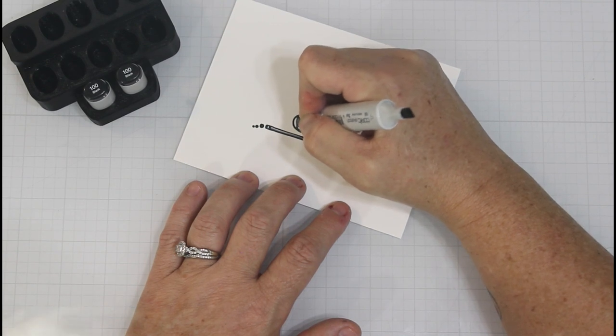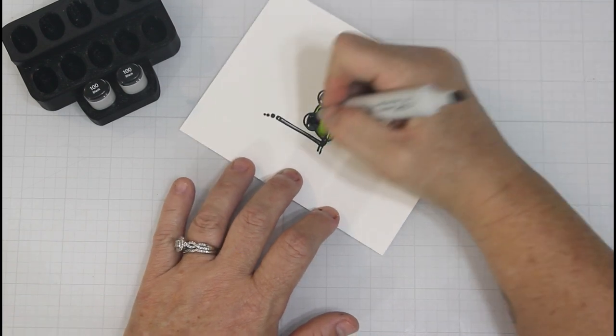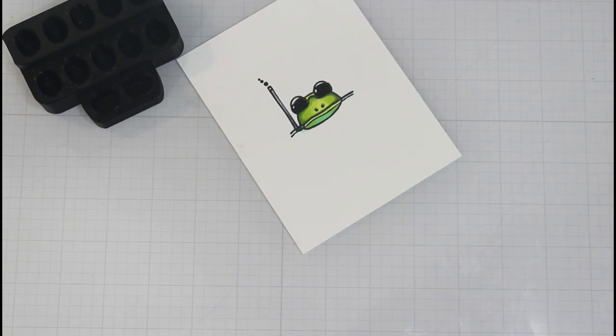I wanted his eyes to be super black so I came in with my Copic 100. You're going to see that there's a huge difference between the eyes now. It really makes those highlights pop.